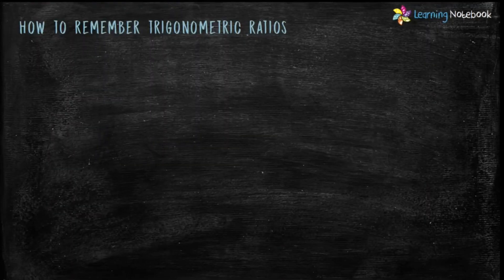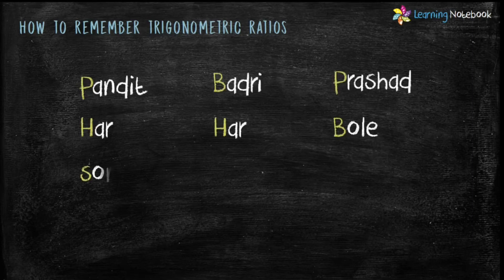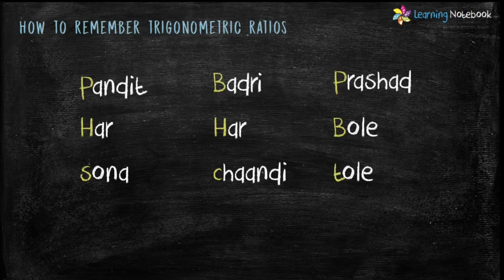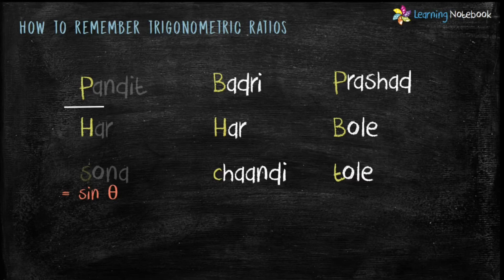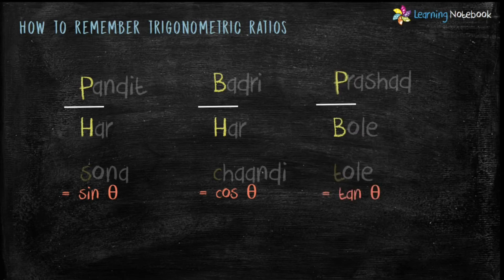The biggest problem is how to remember these trigonometric ratios. There are two ways to remember them — first in Hindi and second in English. The first way uses the phrase: Pandit Badri Prashat, Har Har Bole, Sona Chandi Tole. Take the first letter of each word. The first column gives P upon H equals sin theta, the second column gives B upon H equals cos theta, and the third column gives P upon B equals tan theta.